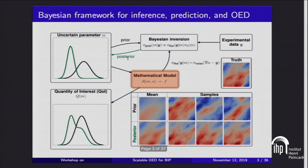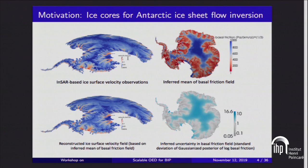Let me start off with a few examples of the kinds of problems we're working on that are posed to take this next step to data assimilation, to optimal experimental design.